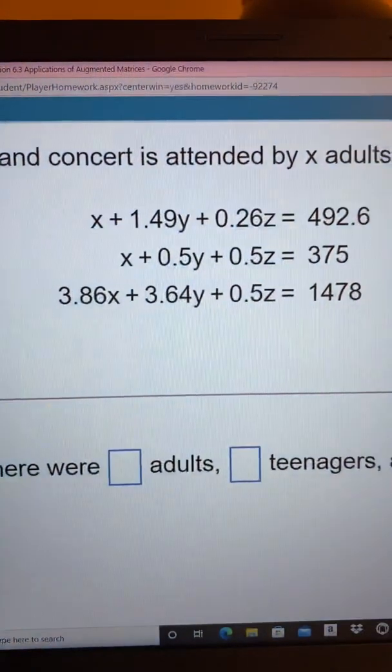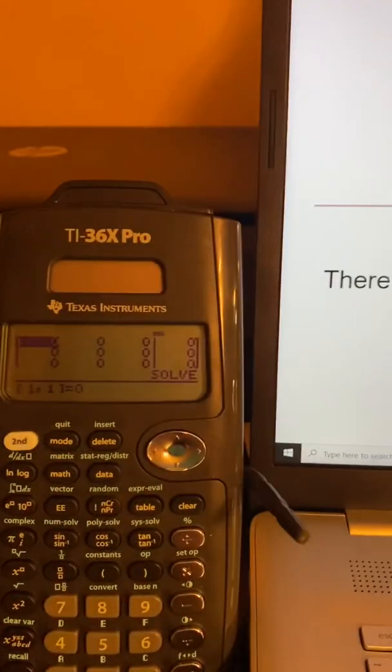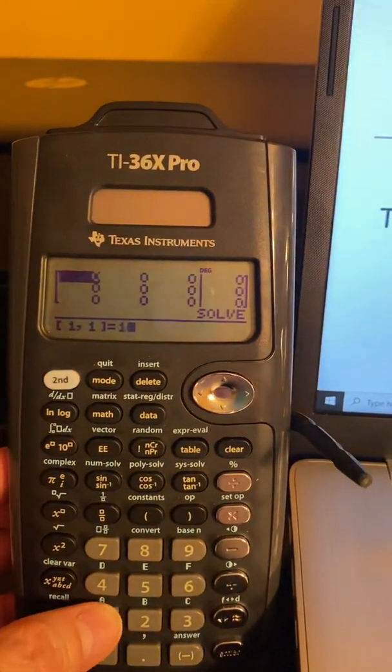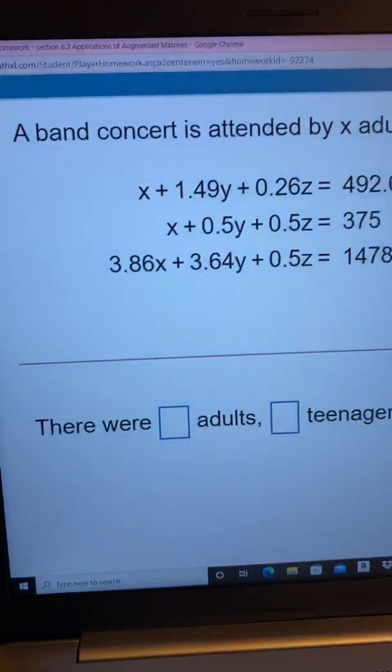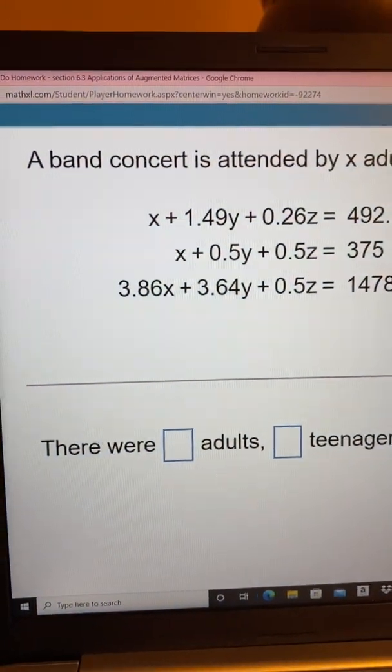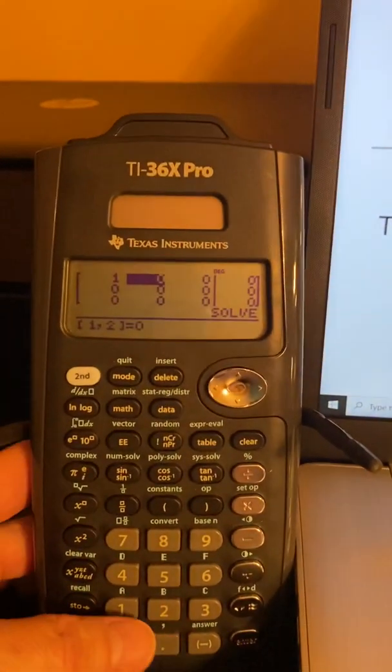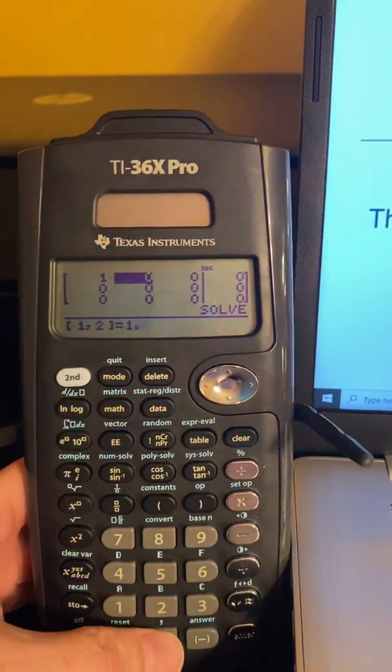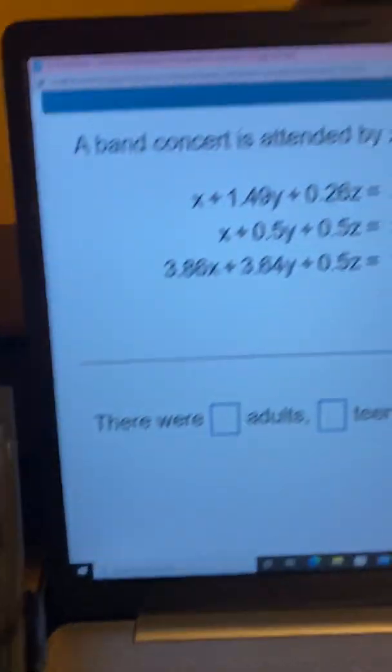So let's put in some values. If we look at our first equation, the coefficient of our x term is 1. So that's what I'm going to put into the matrix. I just put in 1 and hit enter. Then the coefficient of my y term in the first equation is 1.49. So I put in 1.49 and hit enter.